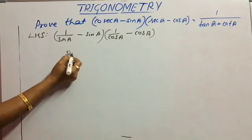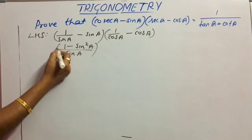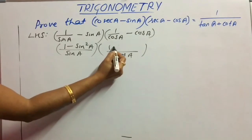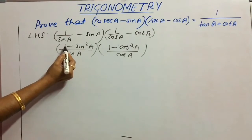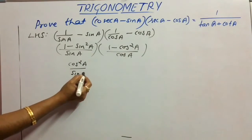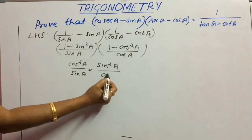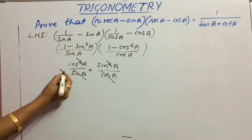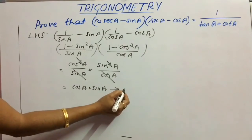Write sec A as 1/cosA - cosA. Taking sin A as LCM in the first factor, the numerator becomes 1 - sin²A. In the second factor, taking cos A as LCM, the numerator becomes 1 - cos²A. Using the identity, 1 - sin²A = cos²A and 1 - cos²A = sin²A, giving cos²A/sinA × sin²A/cosA. One cos and one sin term cancel, leaving cosA·sinA.